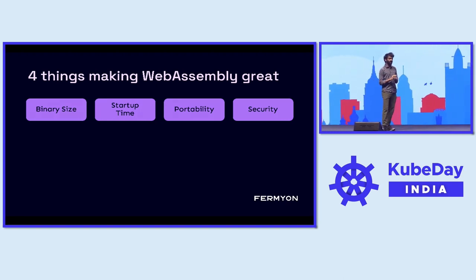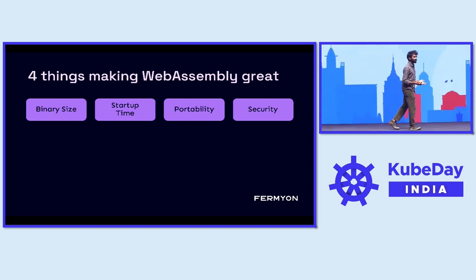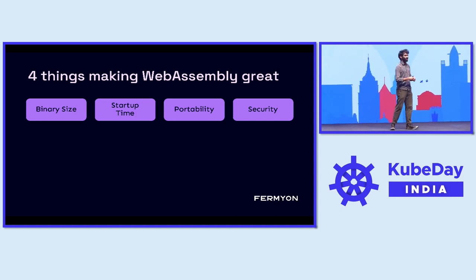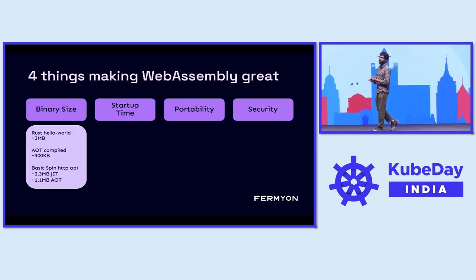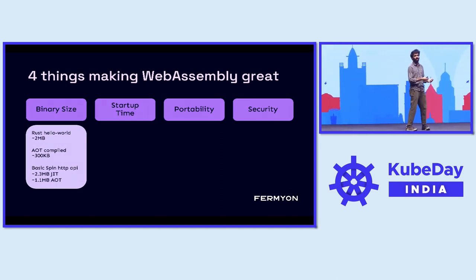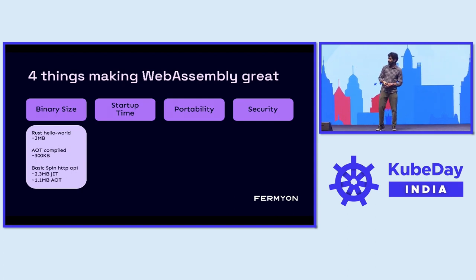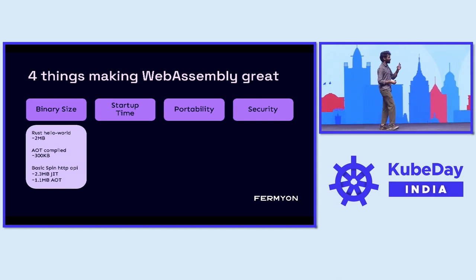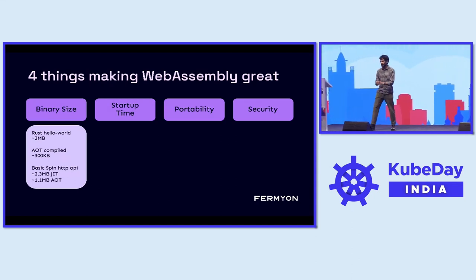There are four things that make WebAssembly pretty cool to run on the server side — taking a look through the lenses of being energy efficient and hardware efficient. When you're looking at scale, a metric like binary size actually makes a big difference. Think of all the deploys we do on a day-to-day basis. A simple Rust Hello World compiled natively is about 2 MB. With ahead-of-time compilation optimizing for architecture and OS, you can bring that down to about 300 KB. Similarly, a Spin HTTP API can be just-in-time compiled at about 2.3 MB, and optimized ahead of time to about 1.1 MB — really small binary sizes compared to apps we run right now.